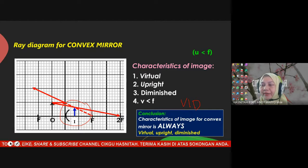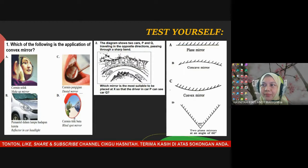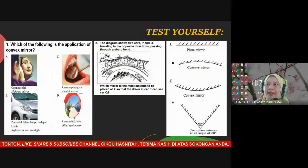Practice question: which of the following is an application of convex mirror? Options are: A) makeup mirror, B) reflector in car headlight, C) dental mirror, D) blind spot mirror. The answer is D — blind spot mirror. The other three (makeup mirror, reflector, dental mirror) are all applications of concave mirrors.